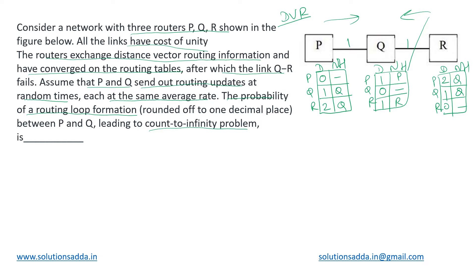Since the link QR has broken, R has been separated from the network. R can no longer send its routing information to P and Q. So Q will update its distance to R as infinity with no next hop. This distance has been updated to infinity. Now only P and Q are left — R is gone. Q is aware of that, but P is not yet aware.